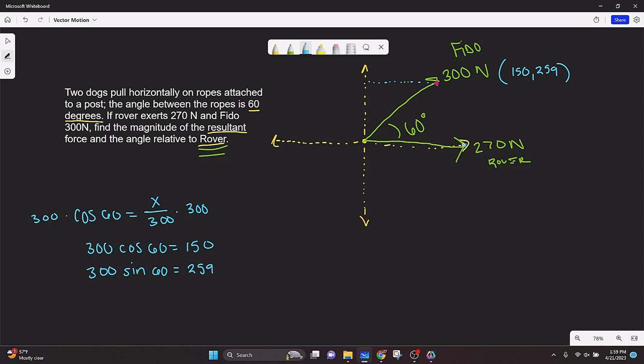And then we want to find this guy right here. So we'll do the same thing. This time we'll do 270 cosine, but the angle is 0 relative to this x-axis. So cosine of 0, which equals 270 because cosine of 0 is 1. And then 270 again, but this time sine of 0 is just 0. So this right here, coordinates would be 270, 0.